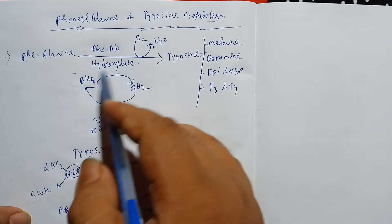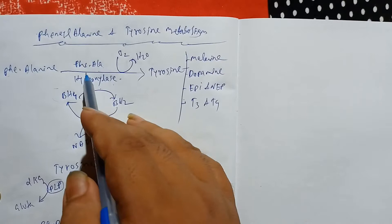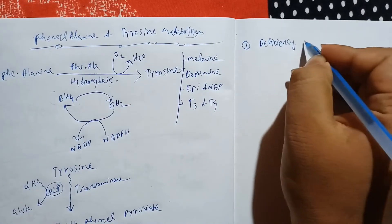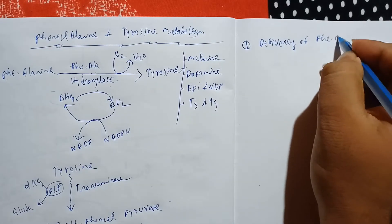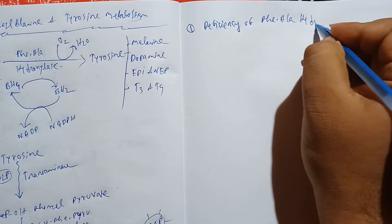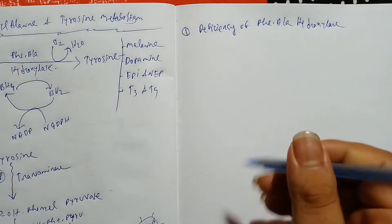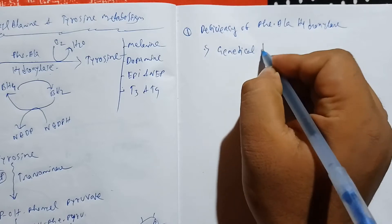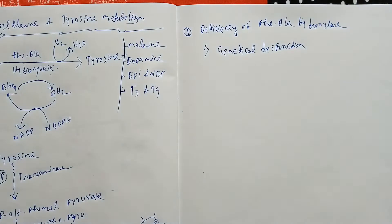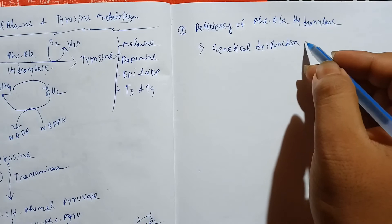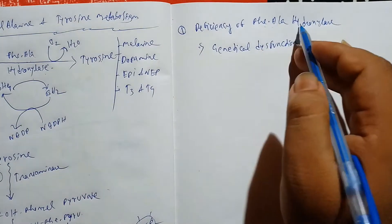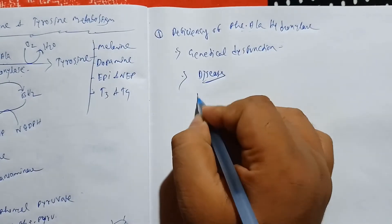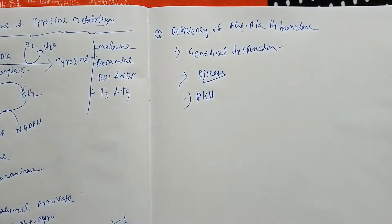First, I'll talk about phenylalanine hydroxylase — the enzyme which helps to convert phenylalanine into tyrosine. Whenever there is a deficiency of this enzyme due to a genetic dysfunction, the gene is not able to produce the enzyme phenylalanine hydroxylase. That leads to a very important disease called phenylketonuria, written as PKU.